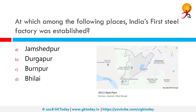At which among the following places was India's first steel factory established? The correct answer is Burnpur, which is in West Bengal. In 1870, a small plant was founded by James Erskine in the jungles of Kulti to make iron. This produced only cast iron. Starting off as Bengal Iron Works Company, it became Burakar Iron Works in 1881 and was renamed Bengal Iron and Steel Company in 1890.